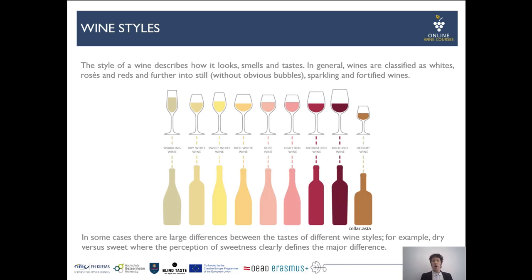The style of a wine describes first of all how it looks, how it smells, and the taste. In general, wines are classified as whites, rosés, and reds simply by color, and further into still — without obvious CO2 bubbles — or sparkling. Furthermore, we have the category of fortified wines, which are generally higher in alcohol due to the fact that ethanol in the form of a spirit was added.